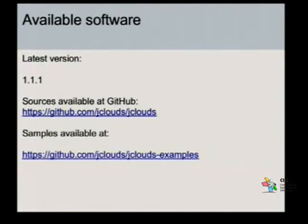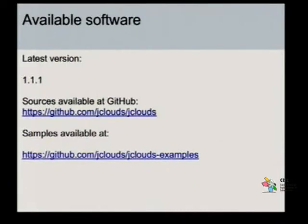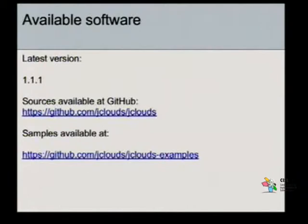O código está sendo disponibilizado no github.com. Tem um diretório lá desse projeto, o jClouds. Lá você vai encontrar todos os fontes, todos os binários dessa biblioteca. E também no GitHub, dentro de jclouds/jclouds-examples, você vai encontrar os exemplos que eles disponibilizam. São exemplos bem simples de como utilizar essa biblioteca, e mais na frente eu vou mostrar dois desses exemplos.